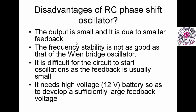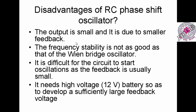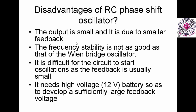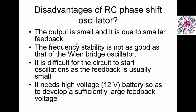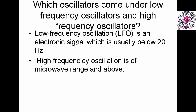The disadvantages of the RC phase shift oscillator: the output is very small due to the feedback. The frequency is not as stable as in the Wien bridge oscillator. It is a very difficult circuit to start oscillation because feedback circuits are generally difficult. It also requires high voltage — we have seen a 12-volt battery is needed — so for low voltages it will not work. These are the disadvantages of the RC phase shift oscillator.